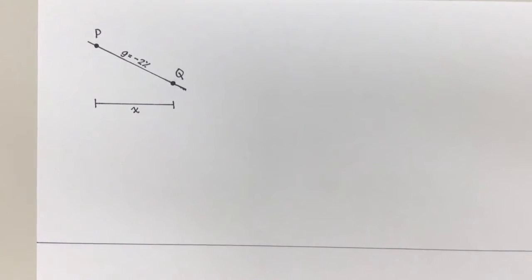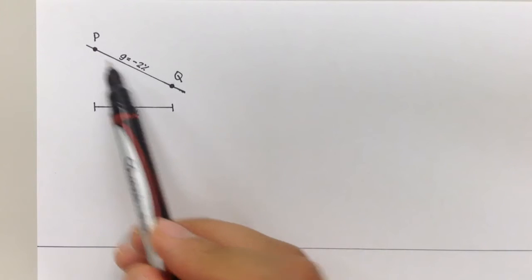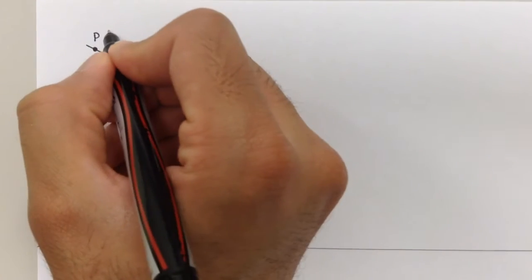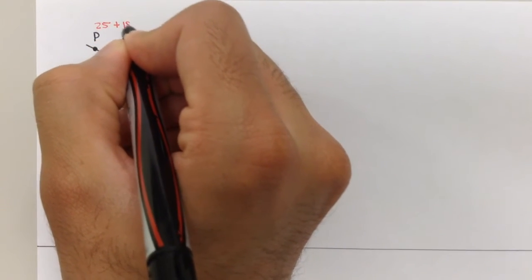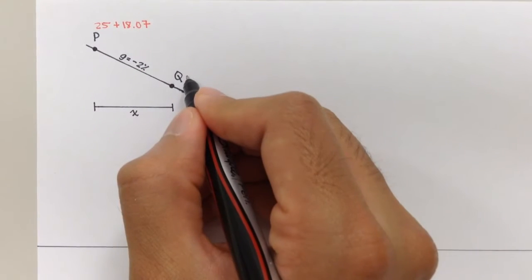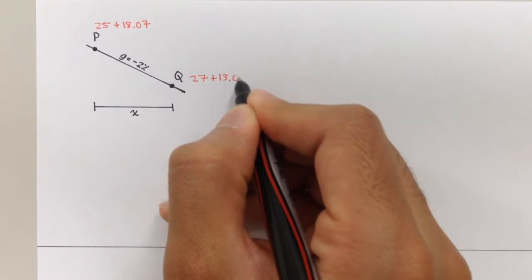All right, so in this first example, and I'm going to have three of them in this video, is this. There's a line here. There's points P and Q, and P is at station, so I'm going to write the stations here. This is station 25 plus 18.07. All right, and this is at station 27 plus 13.01.